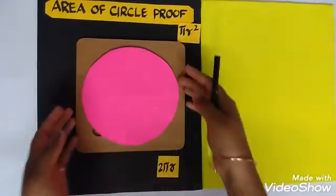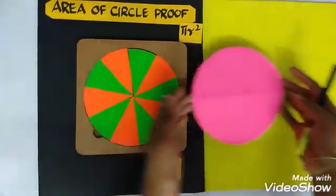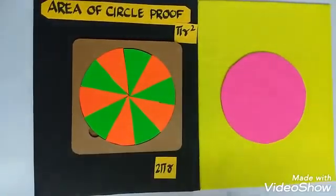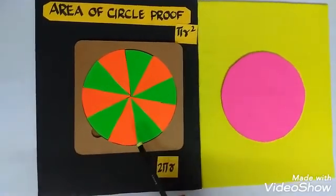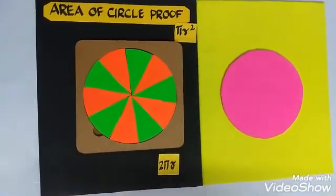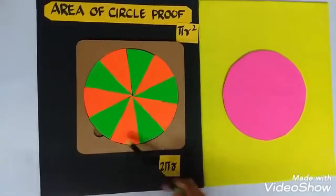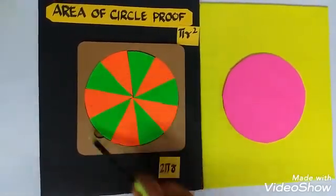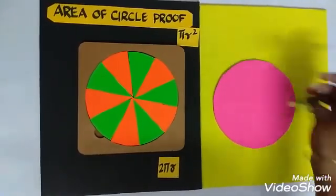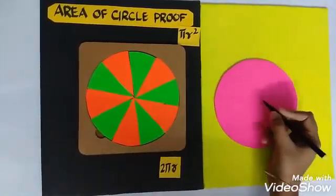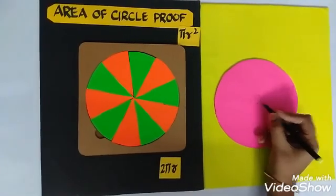Now let us take this circle out. Now see I am dividing this circle into 10 equal parts. These are the 10 equal parts. Now we all know that suppose this is the center.